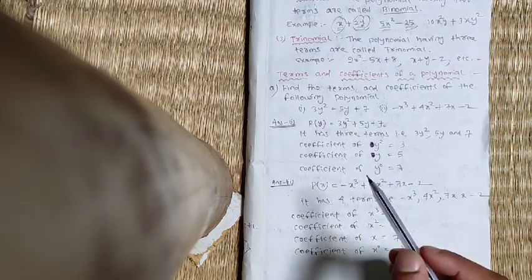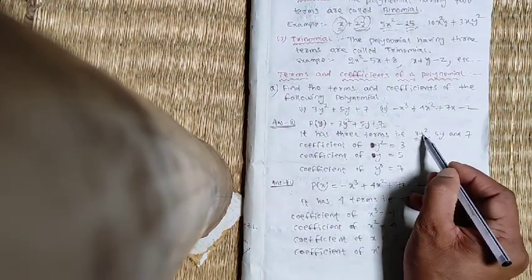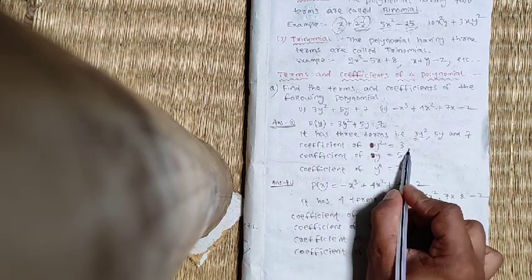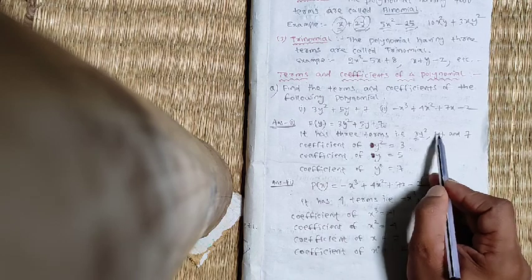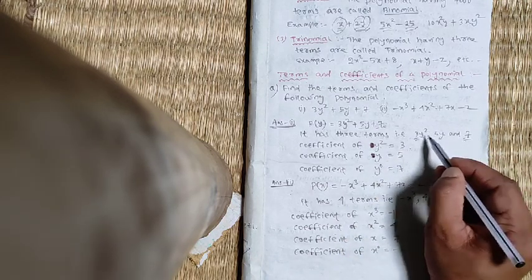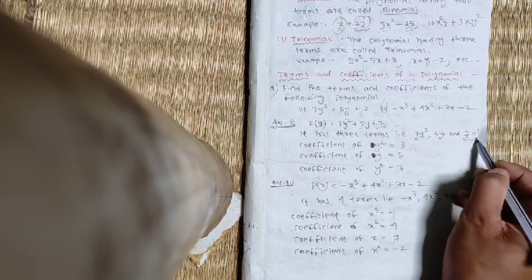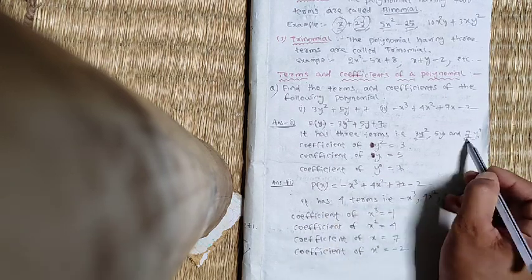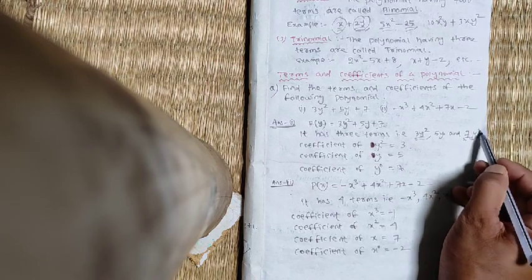Coefficient. The coefficient of variable. 3y squared, the coefficient of y squared is 3. The coefficient of y is 5. The coefficient of constant term is 5. y to the 0 is 0. So the coefficient of y to the 0 is 0.